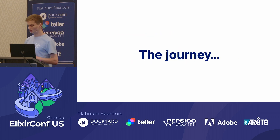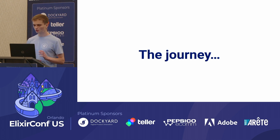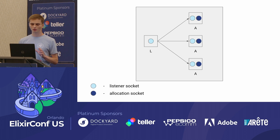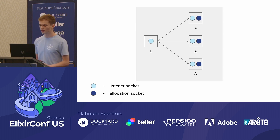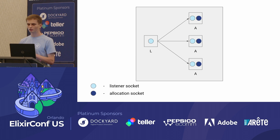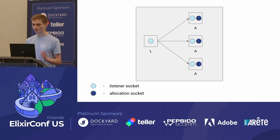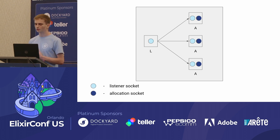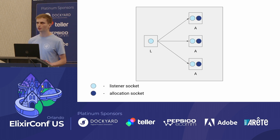I mentioned that the listener socket is a potential bottleneck. At the end of the day we were able to establish at least 2,000 connections, but the journey wasn't easy. We started with an architecture where we have a single listener process responsible for reading all incoming data from all clients and dispatching it across allocations. A single allocation process has two sockets — an allocation socket and a reference to the listener socket. Whenever an allocation process receives something on its allocation socket, it can immediately pass this data to the client using a reference to the listener socket. Binaries in Erlang above 64 bytes are stored on a global heap, so we don't copy a lot of data. However, this solution doesn't scale well.